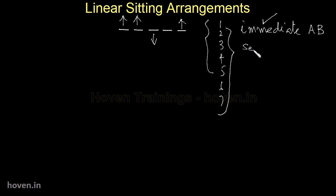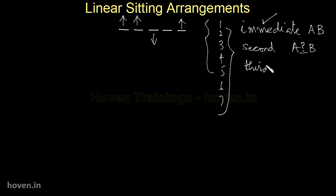But usually the confusion creators are the word 'second.' The statement could be like: B is second to the right of A, or B is second to the left of A. In such a case, somebody is sitting between A and B. You could also have a similar word like 'third' — if there are two persons sitting between them, the statement would be: B is the third neighbor of A, or B is third to the right or left of A. Fourth and fifth are all possible too.